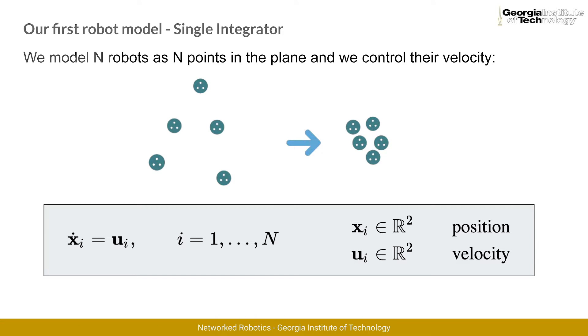In order to keep things simple, we will assume that our robots are described by dots on a plane, and their respective velocities can be directly controlled. Due to its simplicity, this is a common model, and it is called the single integrator model.